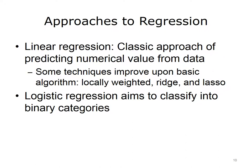There are likewise a number of different approaches to regression. Linear regression is a classical approach of predicting a numerical value from a set of data. There are various techniques that improve upon the basic algorithm of linear regression, such as locally weighted, ridge, and lasso techniques. Another type of regression is logistic regression, which is really more of a classification, in which we aim to classify data into binary categories.